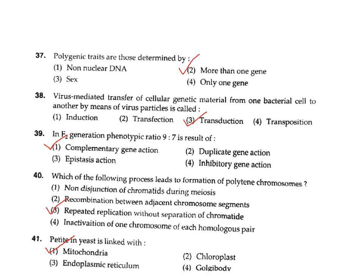Question 37: Polygenic traits are those determined by what? Polygenic traits, also called polygenic characters, are those controlled by more than one gene. Correct answer Option 2 — more than one gene.